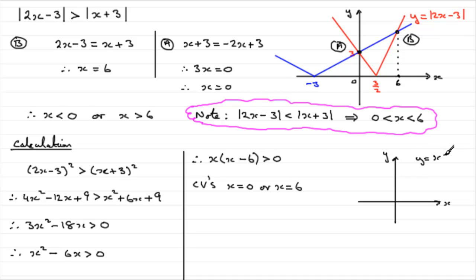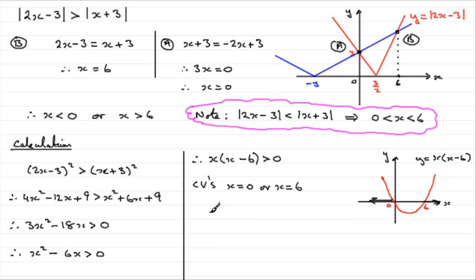We draw a sketch graph of y equals x(x minus 6), a positive U-shaped parabola cutting the x-axis at 0 and 6. We're looking for where the y values are greater than 0. The parabola is above the x-axis to the left of 0 and to the right of 6. So the solution is x less than 0 or x greater than 6.